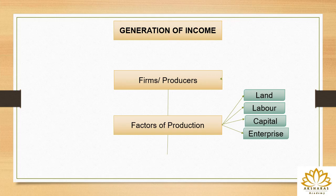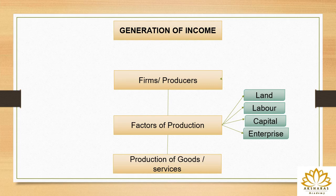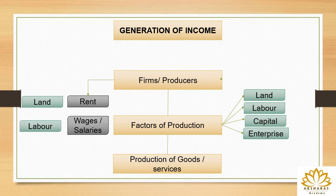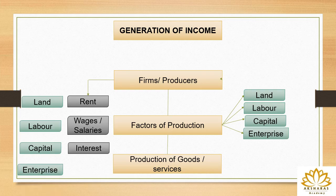With the help of these factors of production, firms and producers produce their goods and services. Now, for the factors of production the firm or producer needs to pay money. For land they pay rent, for labor they pay wages or salaries, for capital invested by the owner they pay interest, and for enterprise it earns profit. These factors of production are supplied by the households — people like you and me.